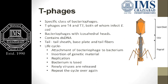T-phages, which include T4 and T7, both infect E. coli. These bacteriophages have icosahedral heads containing double-stranded DNA. They also have a tail, tail sheath, base plate, and tail fibers. They also contain a collar and whiskers. Their life cycle begins with attachment to the bacterium, followed by penetration, inserting their genetic material.